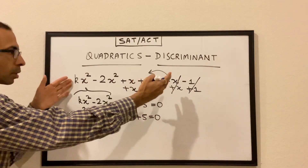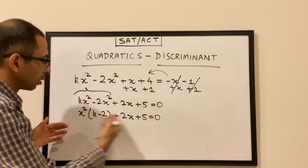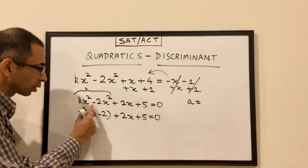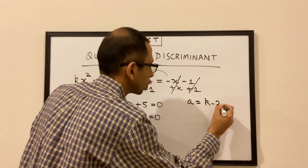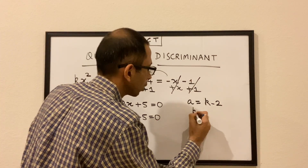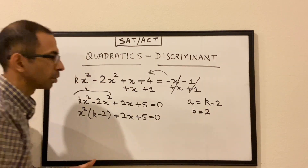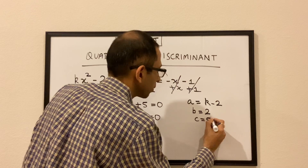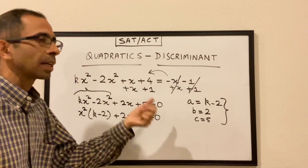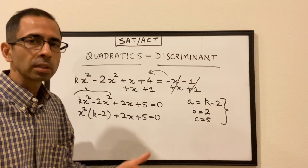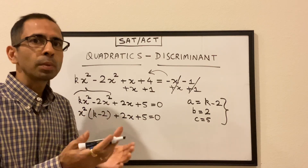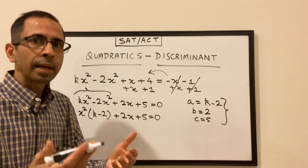So we have reduced the given equation to the standard form: (k minus 2)x squared plus 2x plus 5 equals 0. Here a is the coefficient of x squared, which is k minus 2; b is the coefficient of x, which is 2; and c is the constant term, which is 5. The question asks for values of k for which this equation has no real solutions, meaning imaginary solutions. For a quadratic to have no real solutions, the discriminant must be less than 0, i.e., b squared minus 4ac is less than 0.